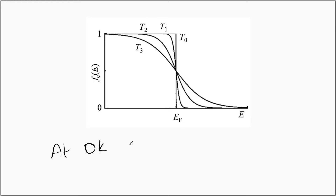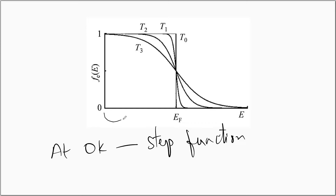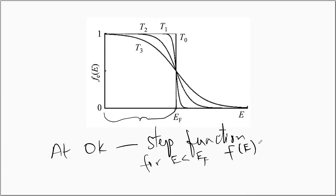When you plot the Fermi function, it looks like this. At 0 Kelvin, the Fermi function looks like a step function, which means all energy levels from 0 to E_F will be occupied by the electrons. For energies E less than E_F, the Fermi function will be equal to 1, indicating that all energy levels up to E_F are occupied. For energies E greater than E_F, the Fermi function gives 0, meaning the energy states above the Fermi energy level are unoccupied.